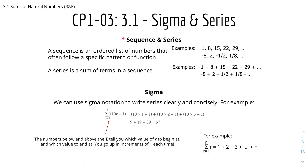So here's the difference between sequence and series. A sequence is an ordered list of numbers that often follow a specific pattern or a function. For example, we have 1, 8, 15, 22, and 29 — and they are a sequence.